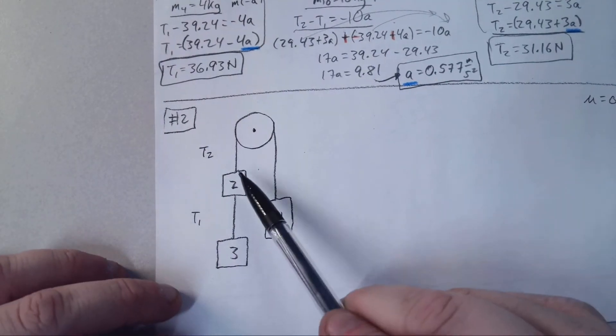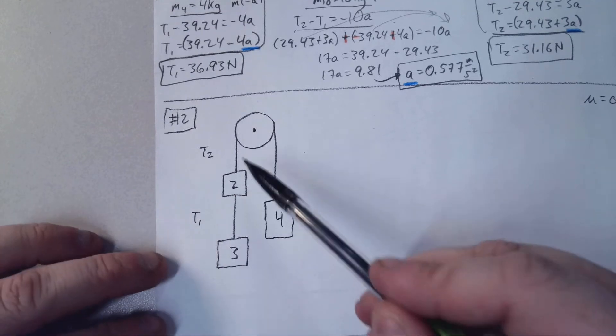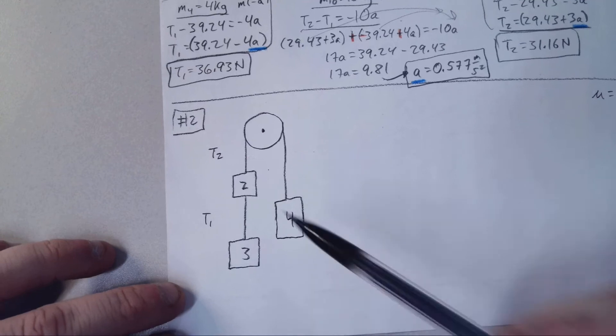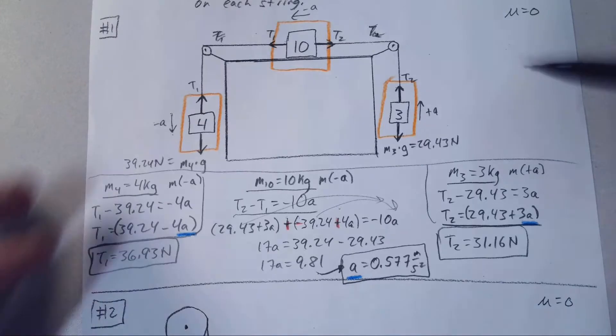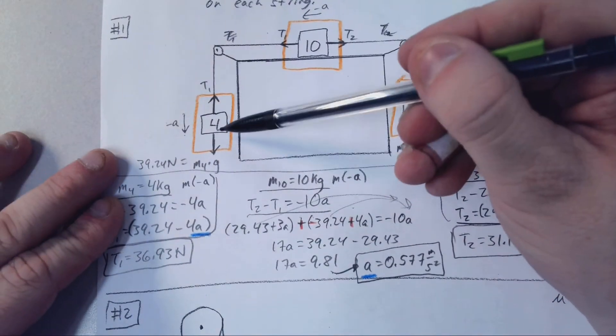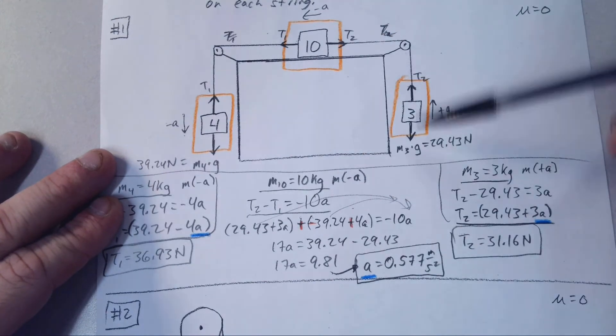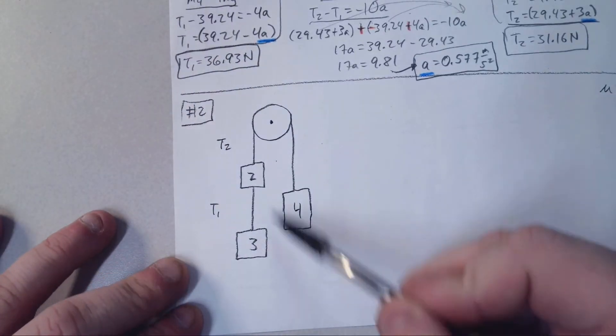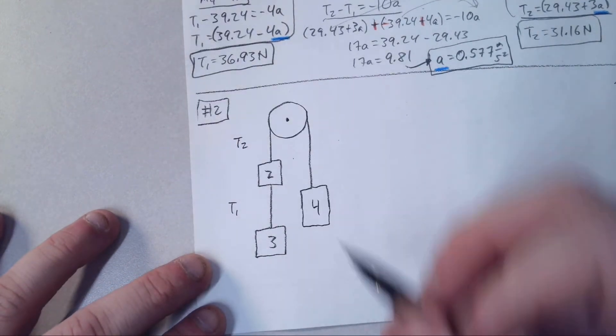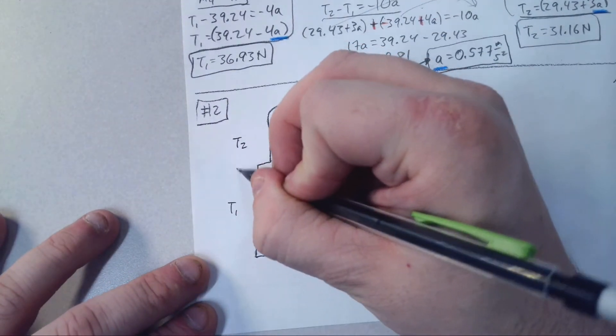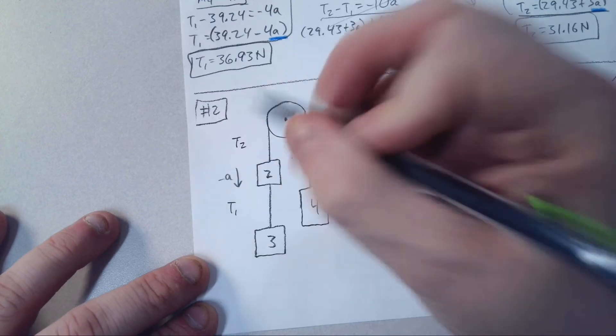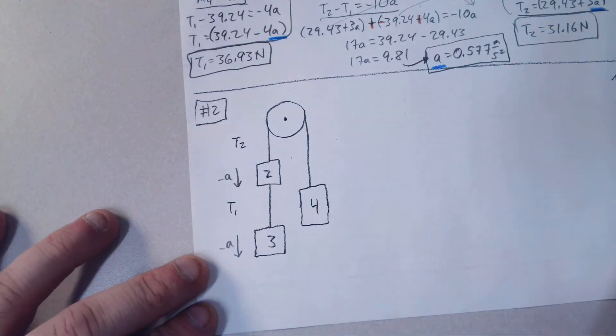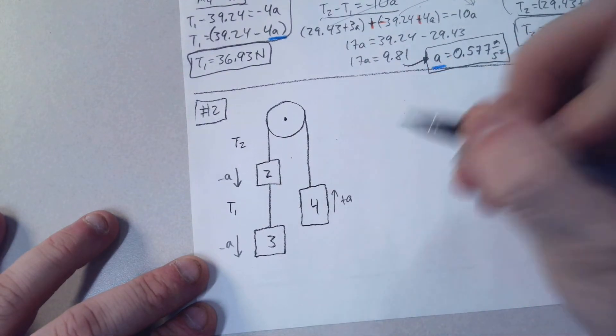Even though four is more massive than each of these individually, the combined mass is five over here, and five is more than four, so that is going to go down. We need to look not just at individual masses, but the combined. So five is greater than four, so both of these are going down and have a negative acceleration. That means this one is going up and has a positive acceleration.